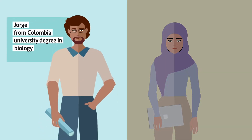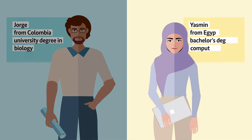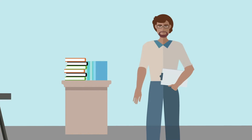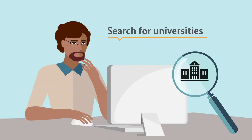Jorge from Colombia graduated from university with a degree in biology, and Yasmin from Egypt completed her computer science bachelor's degree in Cairo. Let's look at the case of Jorge. This is how he uses the Anabin database.